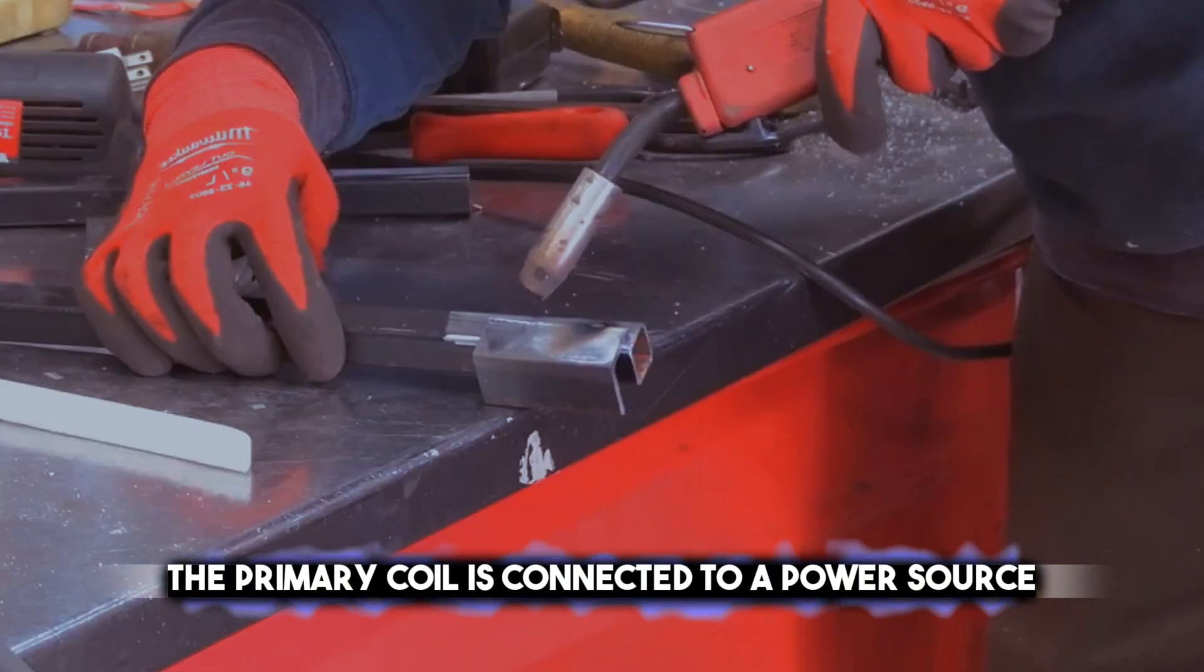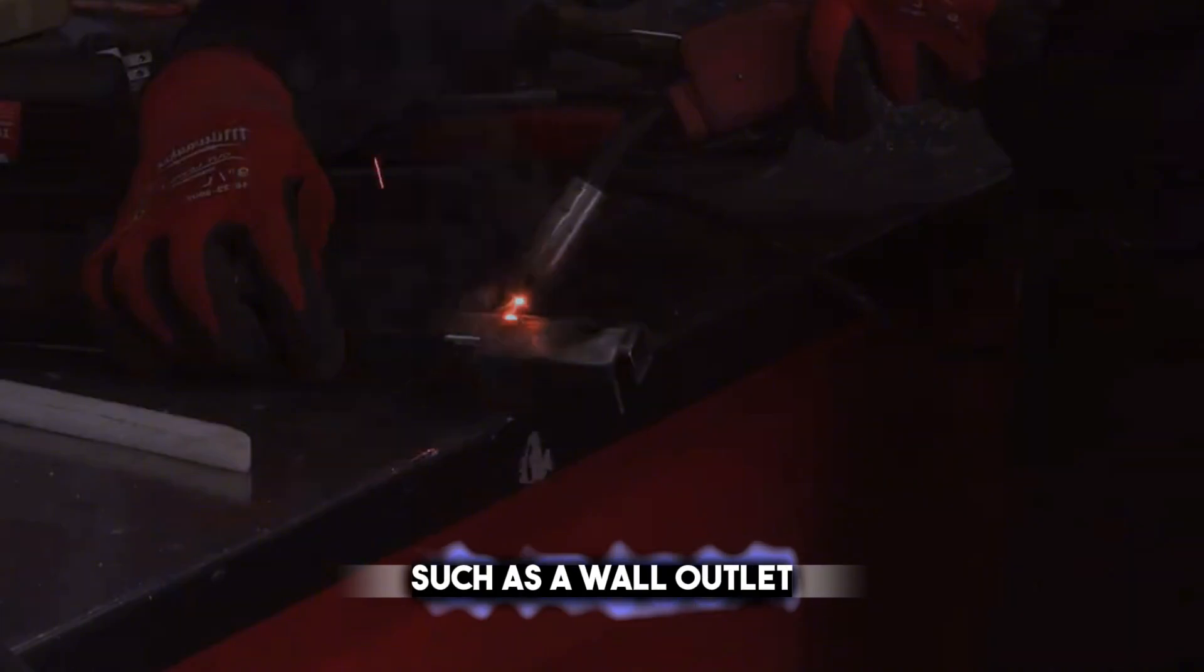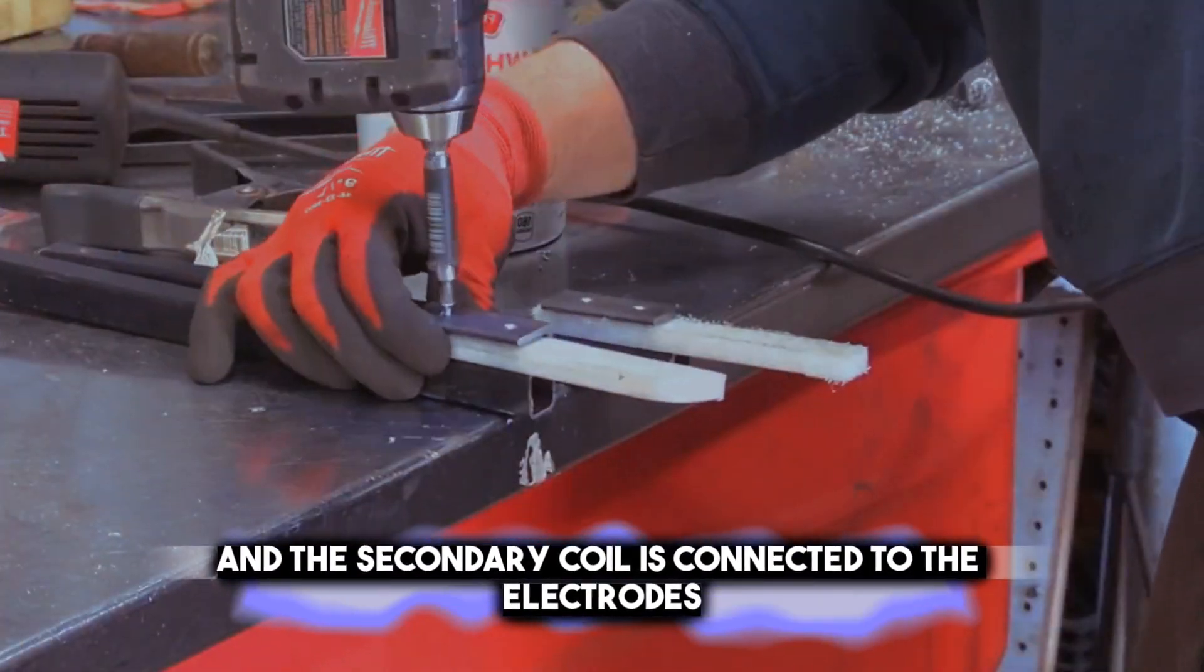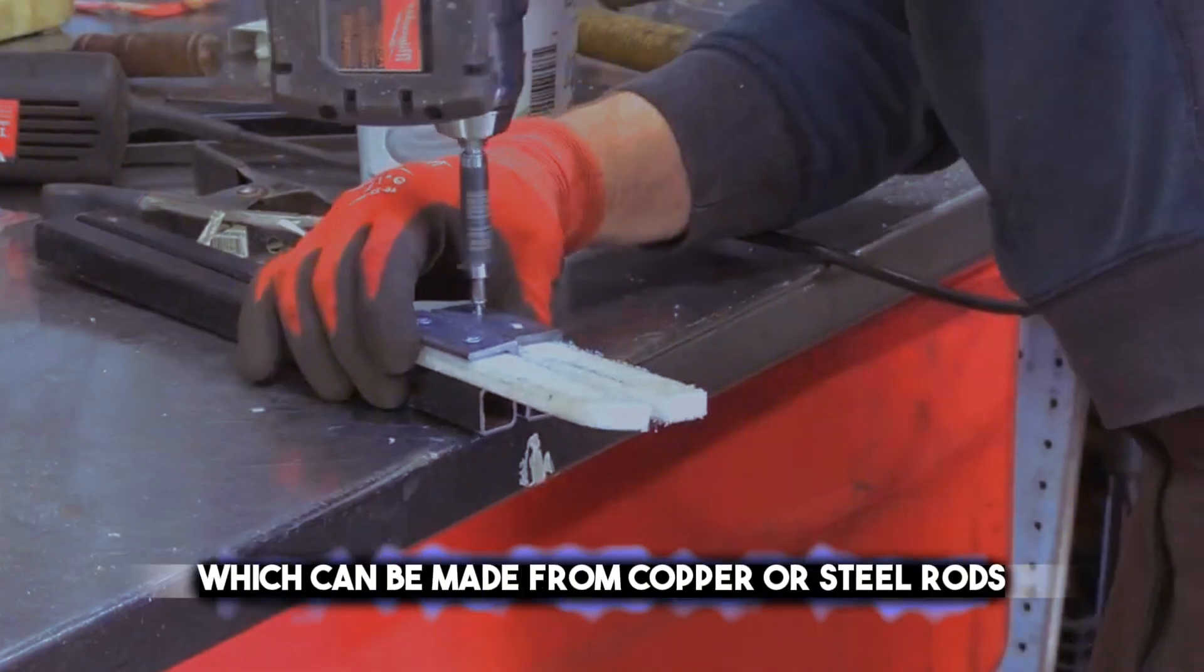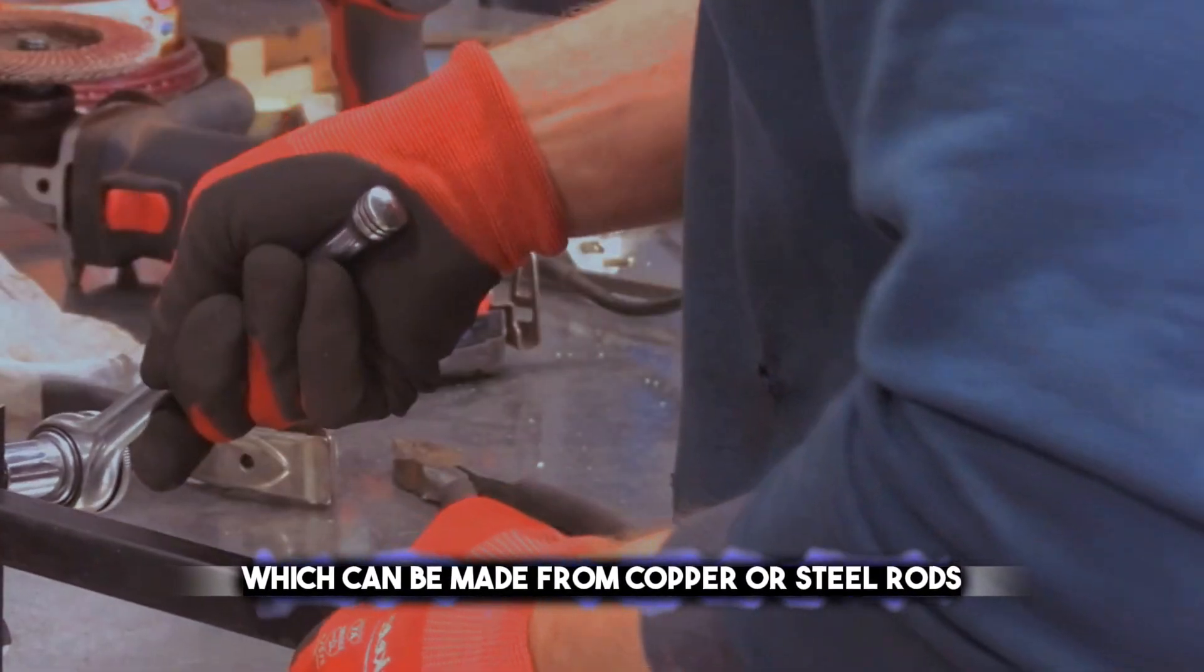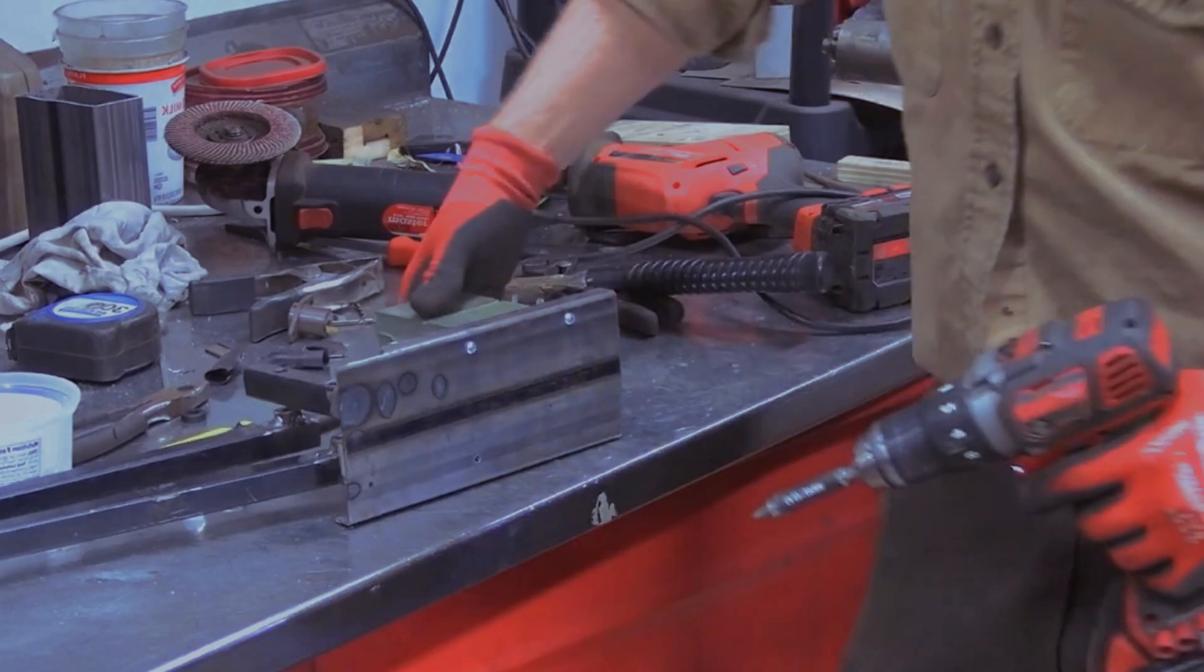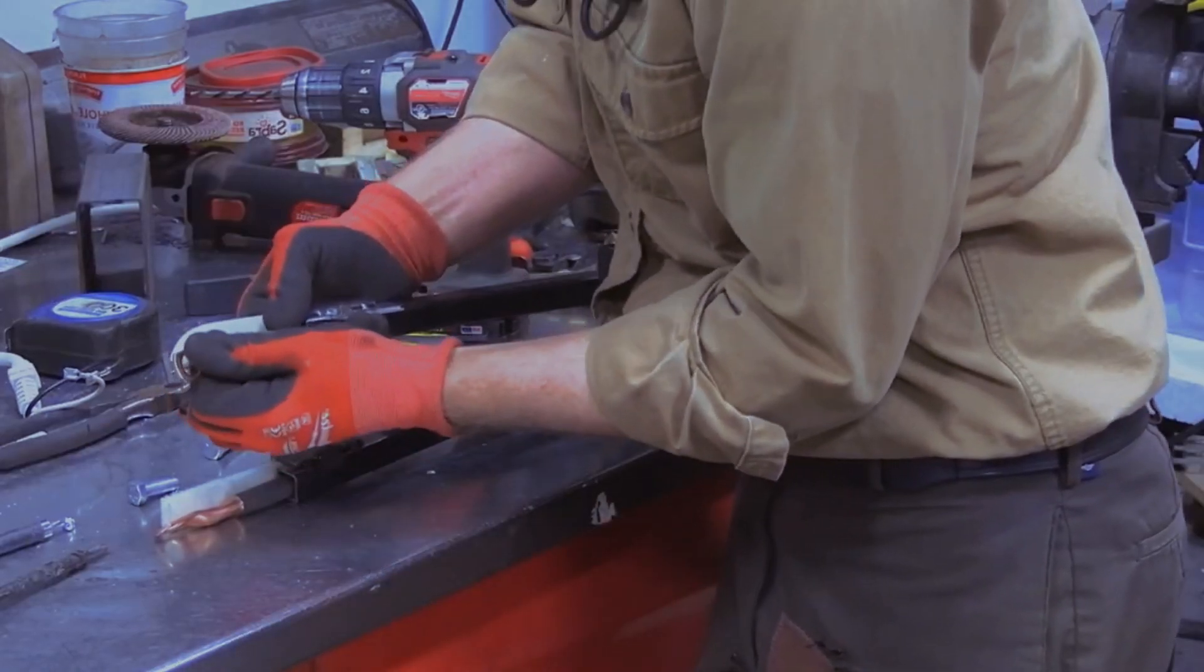The primary coil is connected to a power source, such as a wall outlet or an extension cord, and the secondary coil is connected to the electrodes, which can be made from copper or steel rods. A switch is added to control the current flow, and a timer is added to control the welding duration.